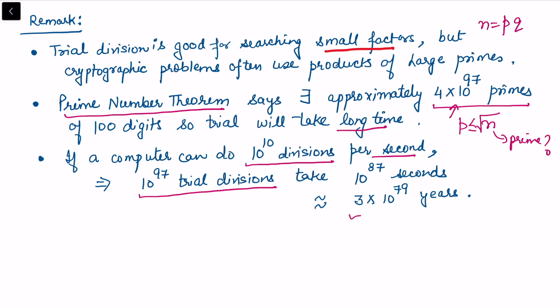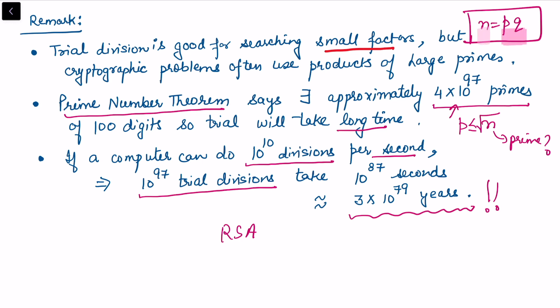That is why the RSA setup, based on n = p × q where p and q are large primes, is considered secure. Only n is given as public information; p and q are not disclosed. Since we do not know p and q corresponding to n, recovering them also involves the factorization problem — and that is what makes the RSA system secure.